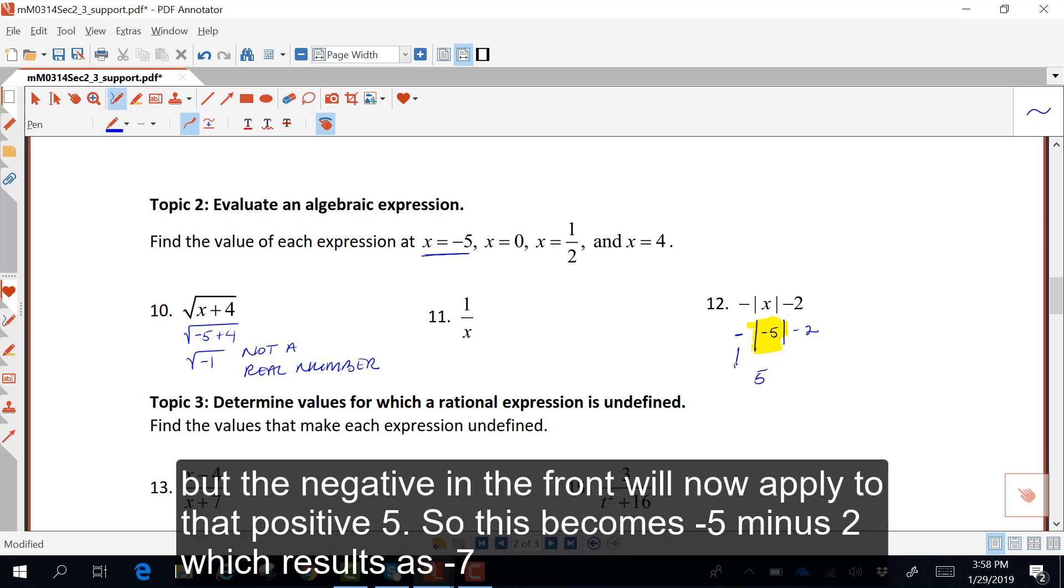But the negative in the front will now apply to that positive 5. So this becomes negative 5 minus 2, which results in negative 7.